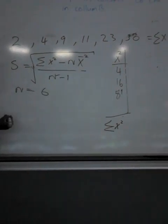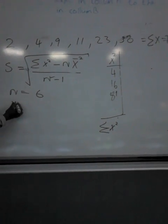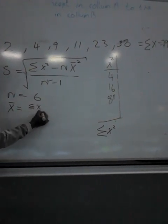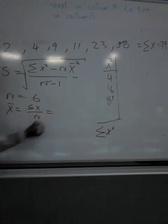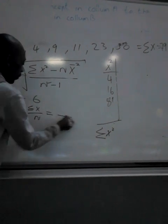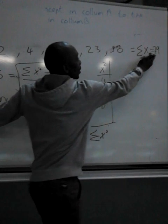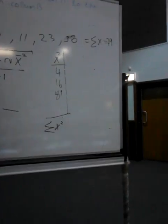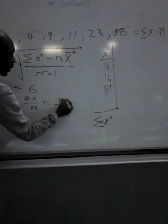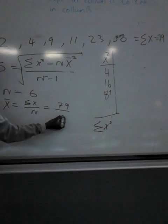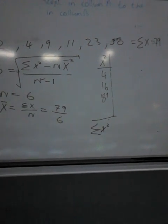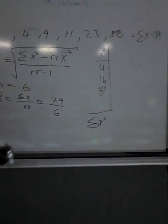Can you see that? So we are done with this one. What are we searching for now? Mean. So what is mean? Mean is sum of x over n. What is our sum of x? It's going to be 79 over n. What is n? Six. So when you punch on your calculator, how much is it?